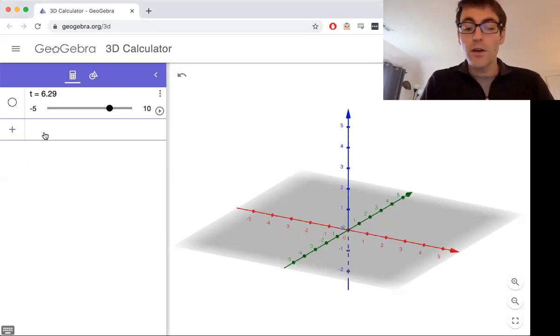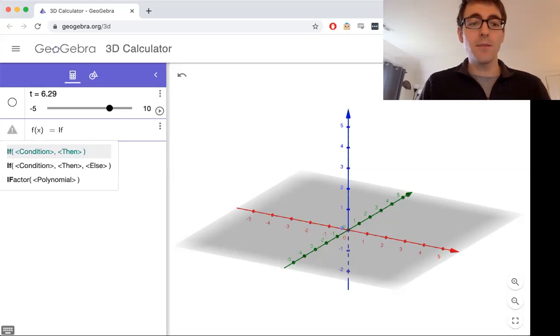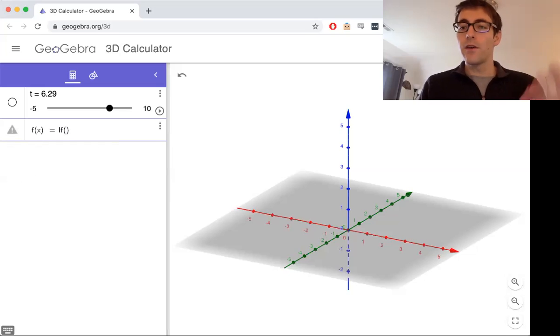And we also need our function itself. The way that piecewise functions work in GeoGebra is you want to use an if statement. So if some condition holds, let's say we're talking about x's between...